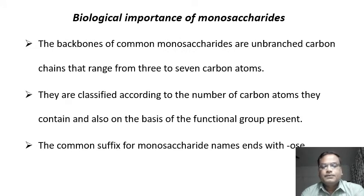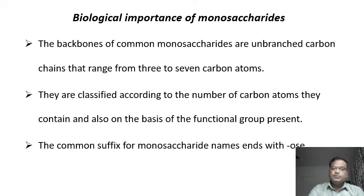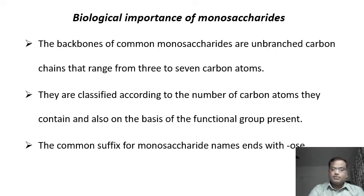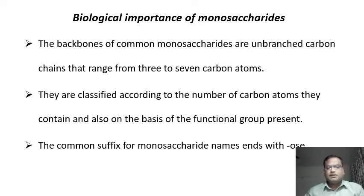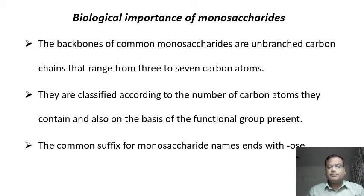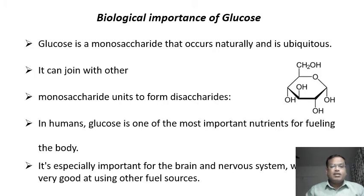Monosaccharides are made up of three to seven carbon atoms, which form the backbone of these monomers. For example, trioses have three carbon atoms, tetroses four, pentoses five, and hexoses six carbon atoms. The classification is dependent upon the number of carbon atoms they contain, and they normally end with the suffix '-ose'.